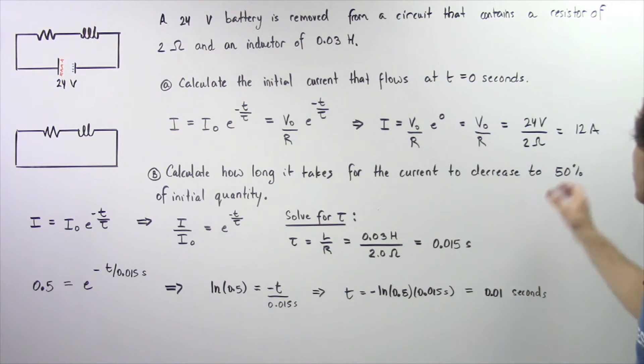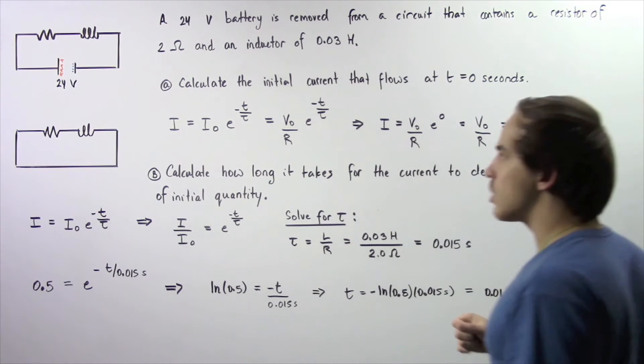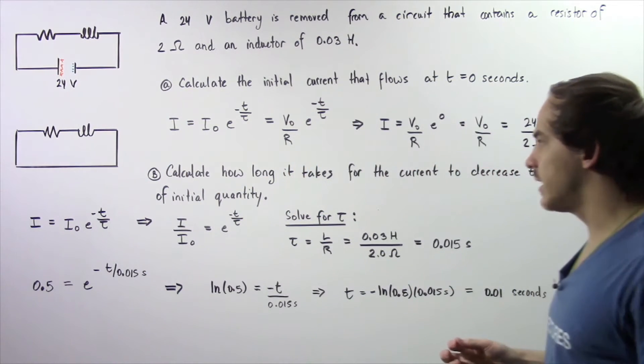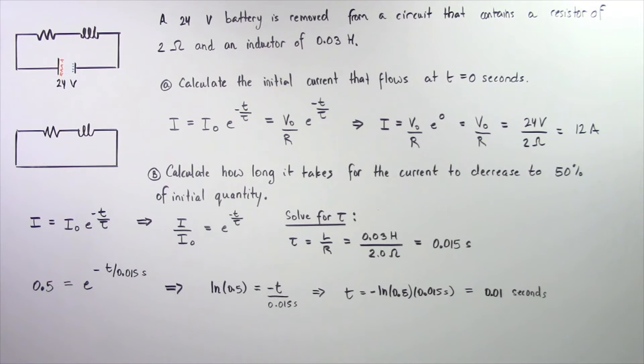After some time, this quantity begins to decrease according to this equation. In part B, we want to calculate how long it takes in seconds for the electric current to decrease to 50% of this initial quantity, that is, to 6 amps.